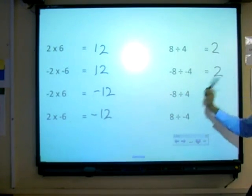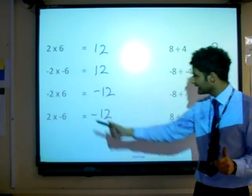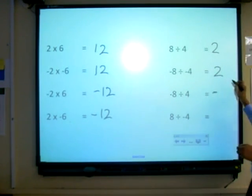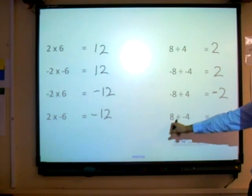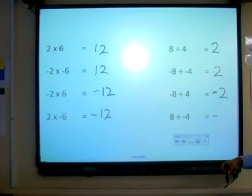A negative divided by a positive. Same thing what I've learned here with the multiplication becomes a negative. And that's negative 2. And here, we've got a positive divided by a negative. Again, that stays a negative. And that's negative 2.